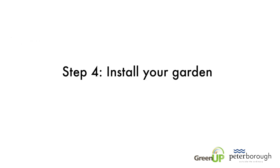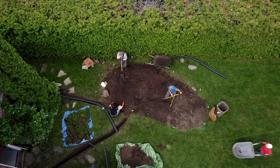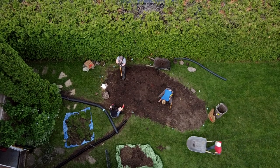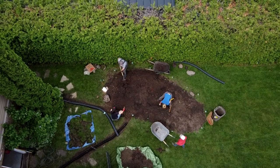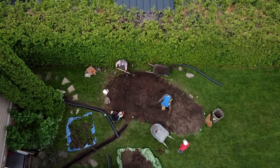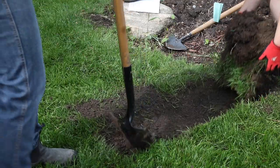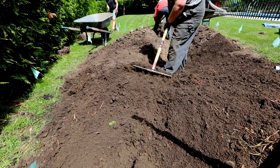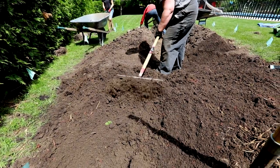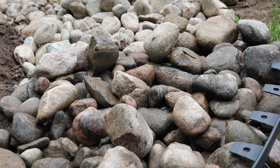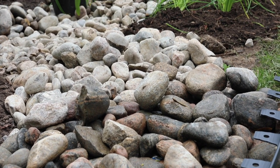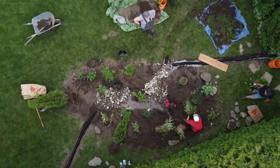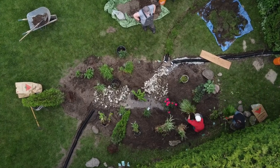Step 4: Install your garden. During the garden construction process, a rain garden expert will visit your garden in order to make sure it functions correctly. Please note that this visit is required unless your garden is being installed by a landscaping professional with appropriate rain garden credentials. Once you've received your visit, you can finish constructing and planting your garden.